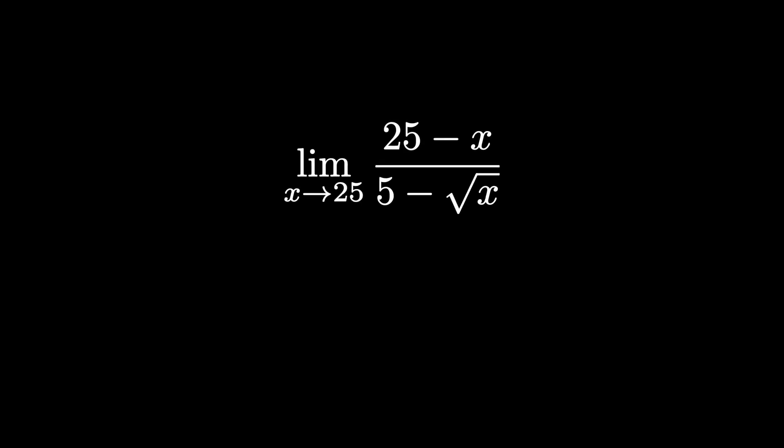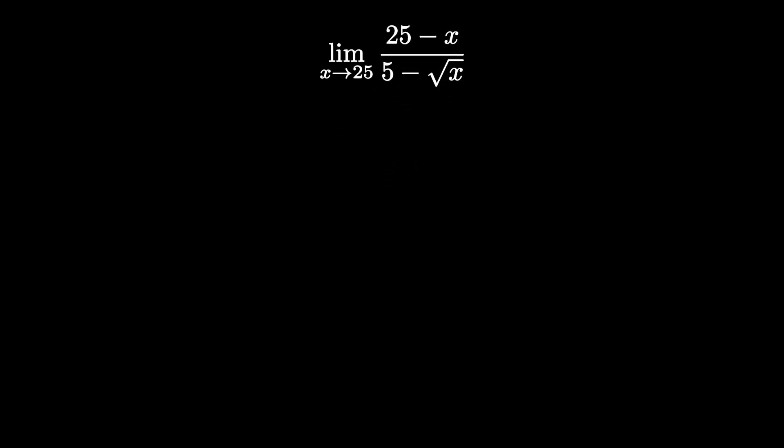Let's evaluate the following limit. We have the limit as x approaches 25 of 25 minus x, all over 5 minus the square root of x. As always, when it comes to evaluating limits, you want to plug in the value that x is approaching, and in this case, x is approaching 25.